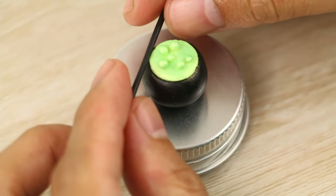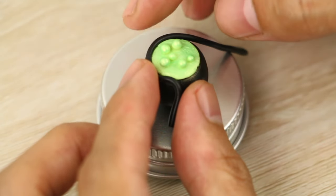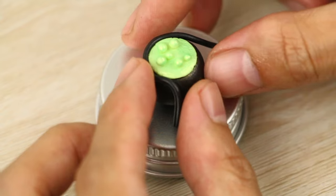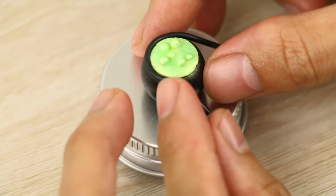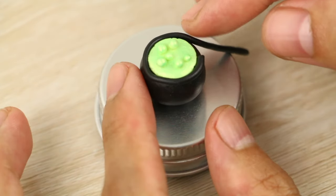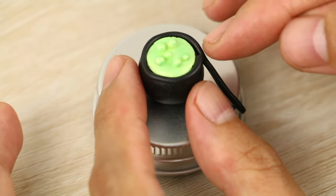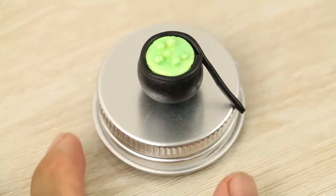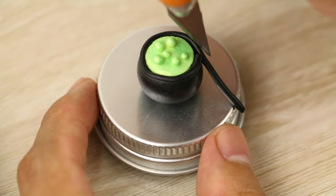Then I'm wrapping it around the edge of the green disc and cutting off the excess where the two ends meet.